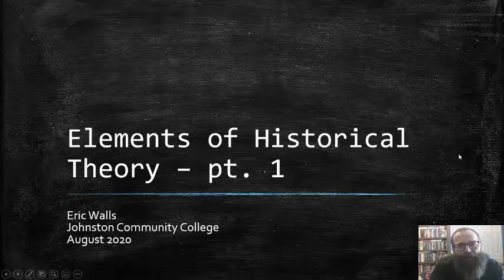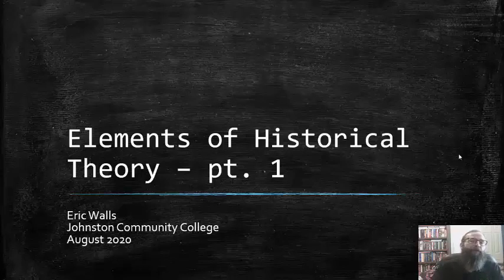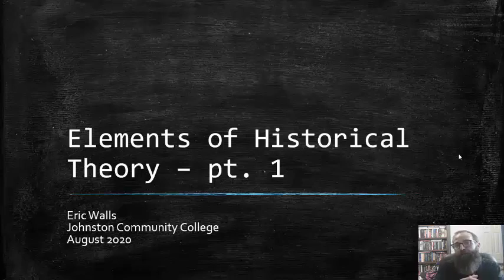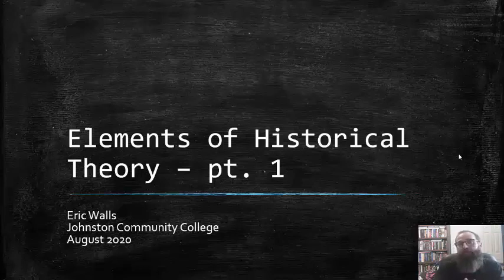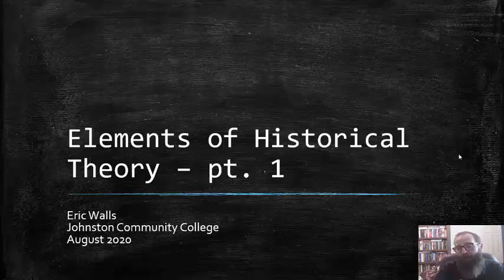Hello again everybody. Before we get into the nuts and bolts of this course — the actual study of American history — I want to discuss what are known as the elements of historical theory. These are tools that historians and students of history can use to analyze and interpret historical information and processes. There are 17 of these elements, broken down into four presentations, of which this is the first.